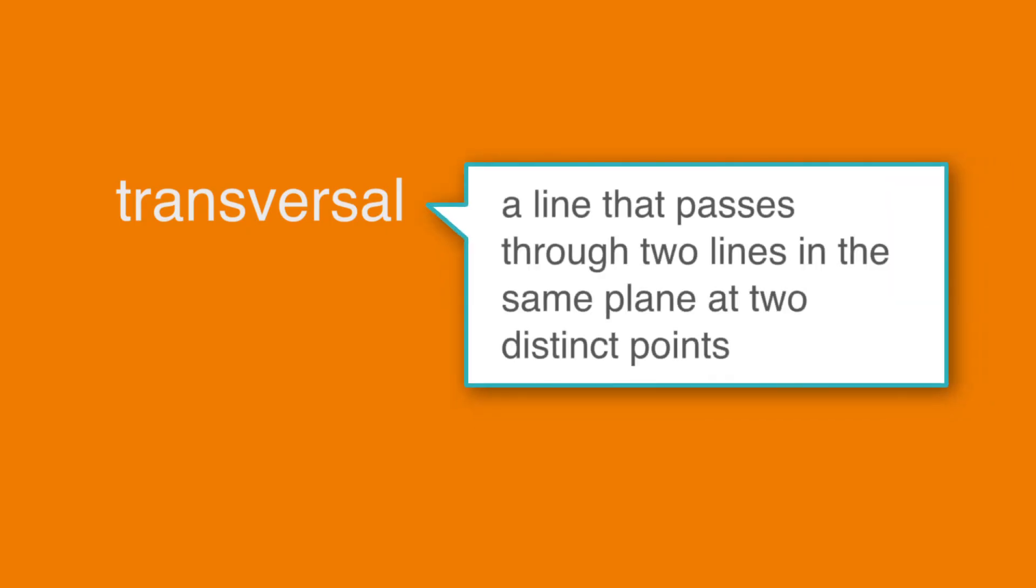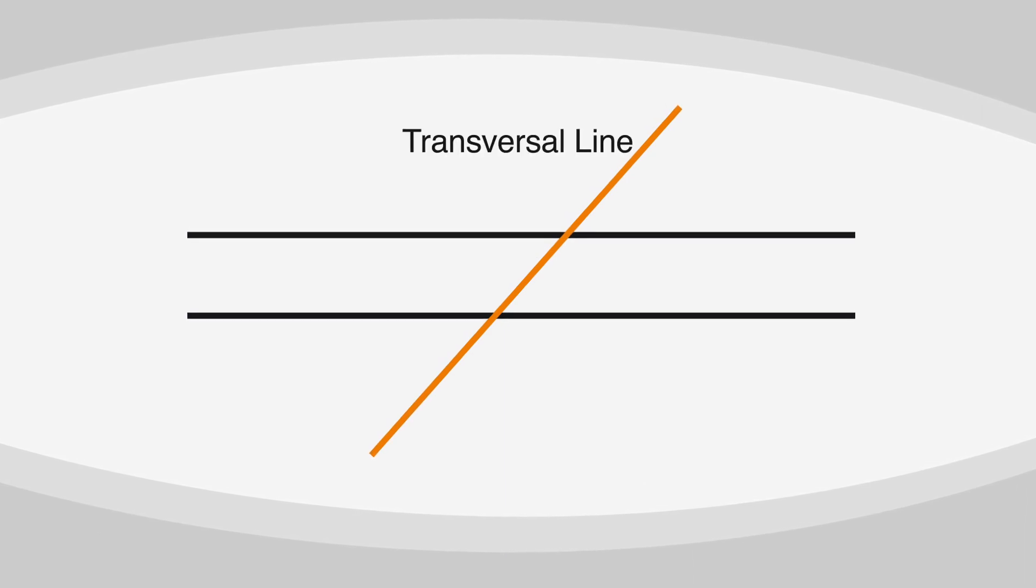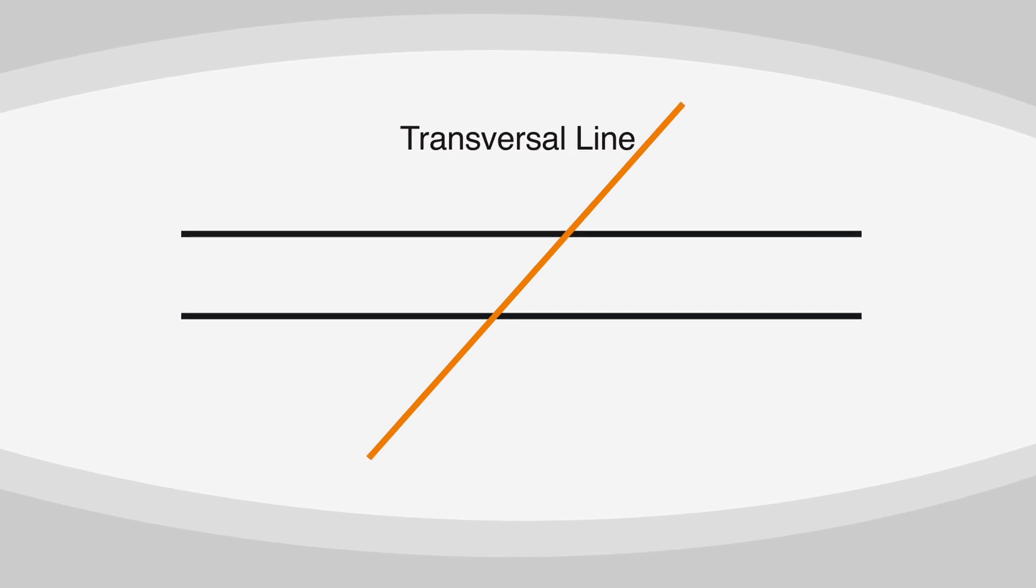In geometry, a transversal is a line that passes through two lines in the same plane at two distinct points. In simpler terms, for the purposes of the ACT, a transversal is usually a line that cuts across two parallel lines, like in this picture.